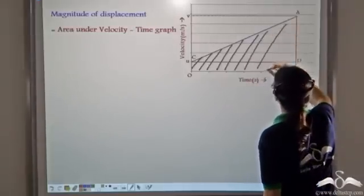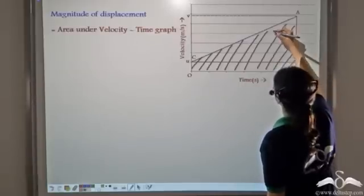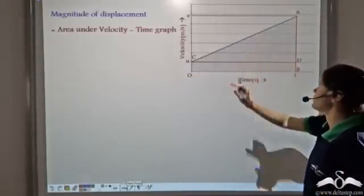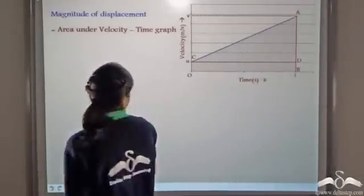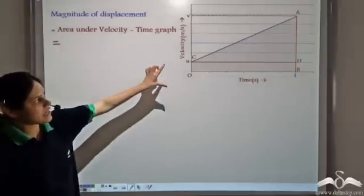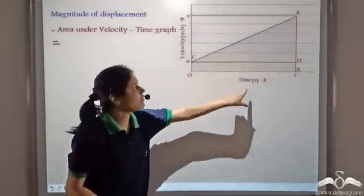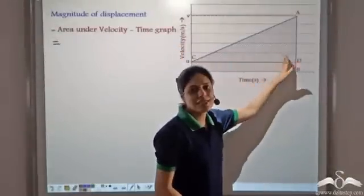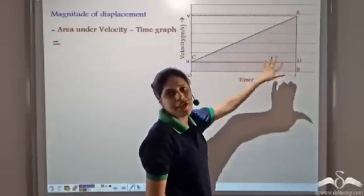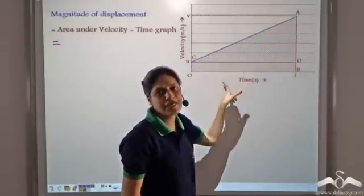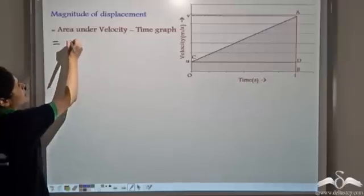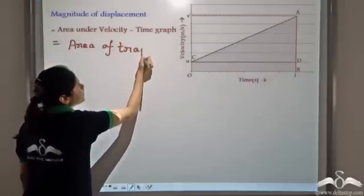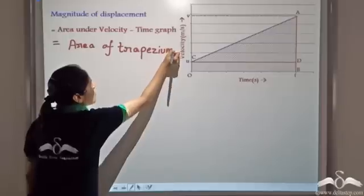This area under the velocity-time graph gives us the displacement. This is the area of region O, C, A, B. Note that the sides CO and AB are parallel, so O, C, A, B is a trapezium. So the area under the velocity-time graph is equal to the area of trapezium OCAB.